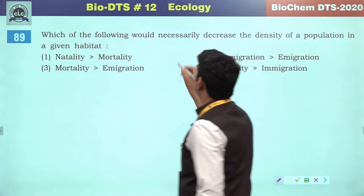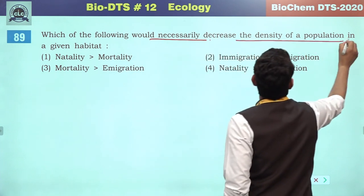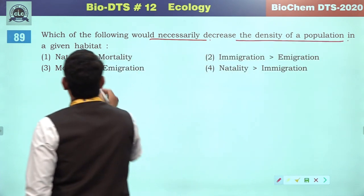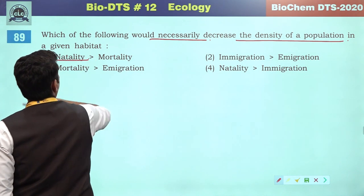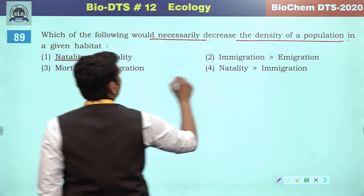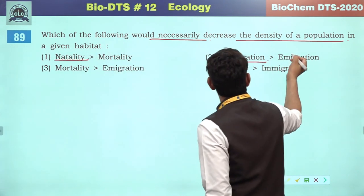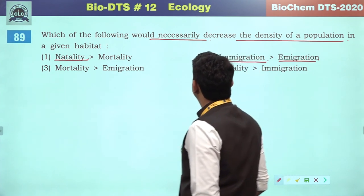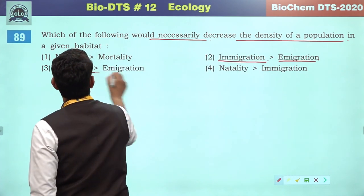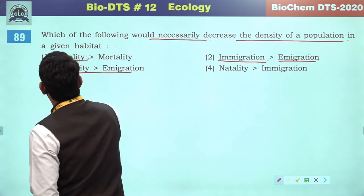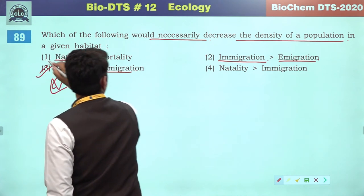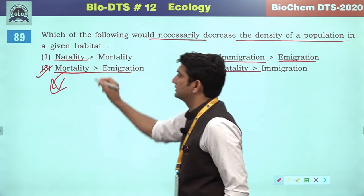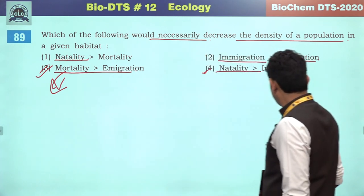Which of the following would necessarily decrease the density of a population in a given habitat? Natality shown higher would not decrease it. So the third will be the correct answer.